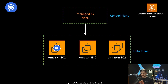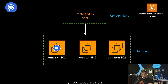An Amazon EKS cluster looks like this: you have the control plane which is managed by AWS, then you have the data plane where multiple EC2 instances are running as worker nodes. Your application is running inside a container, which is running inside a pod, which is running inside one or multiple EC2 instances in the data plane.